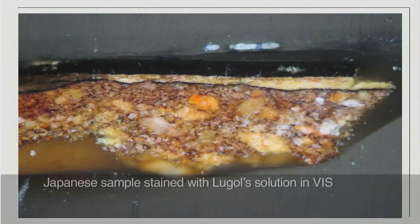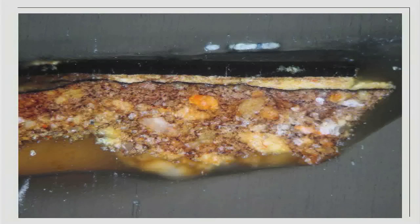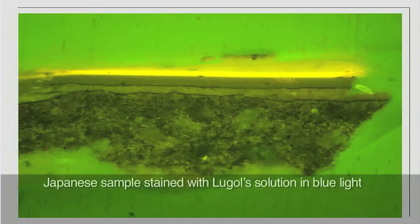The cross-section of the Japanese lacquer sample shown earlier now displays a lower foundation layer that contains a small amount of starch. The positive staining result can be clearly seen in visible but also in blue light under the microscope.